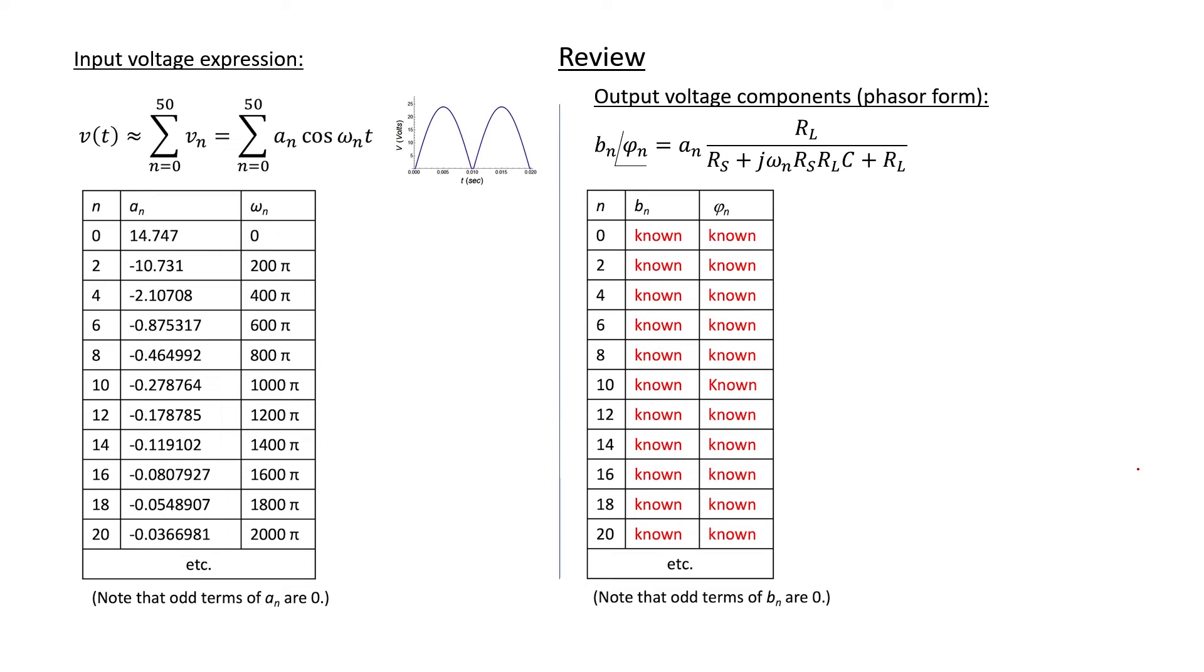We have an output in terms of our input in phasor form. We know all of the b_n. We know all of the phi_n through this expression. Therefore we have an expression for the output voltage as a function of time. I've used the computer program Mathematica in order to make the following plots.